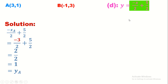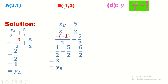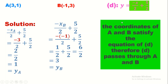What about B? We compute -xB/2 + 5/2 = -(-1)/2 + 5/2 = 1/2 + 5/2 = 6/2 = 3. Isn't that equal to yB? So yB = -xB/2 + 5/2. The coordinates of B also satisfy the equation of D. Therefore D passes through both A and B.